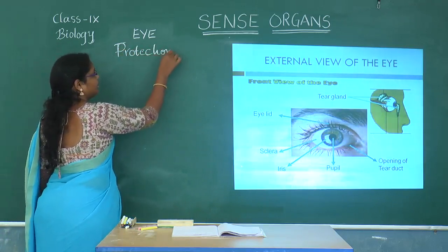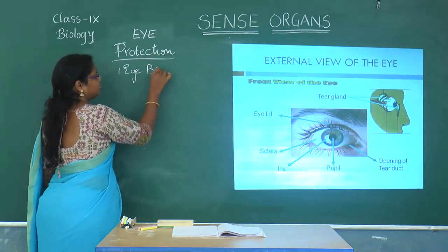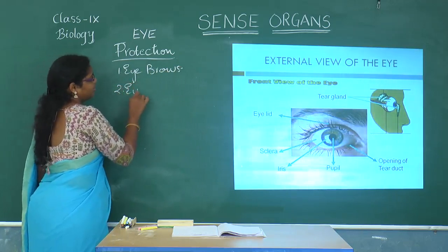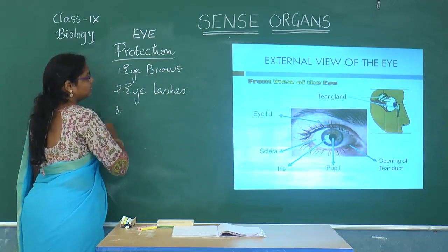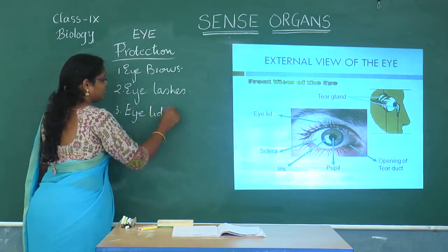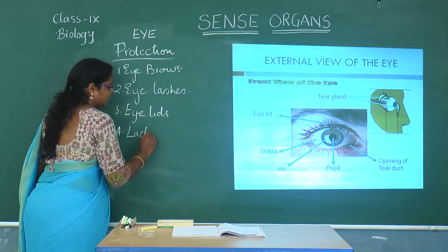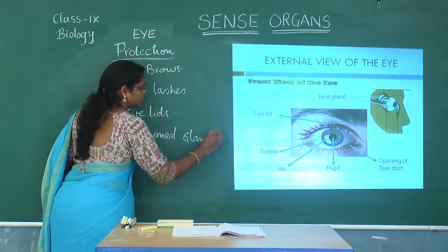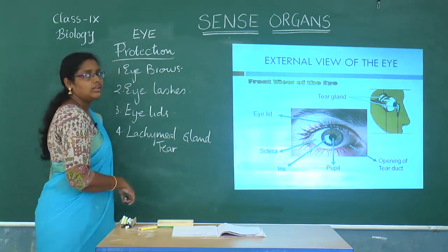So our eyes are protected by eyebrows, eyelashes, and eyelids, as well as glands — the lacrimal glands, also called tear glands — which help in protecting and maintaining the eye.